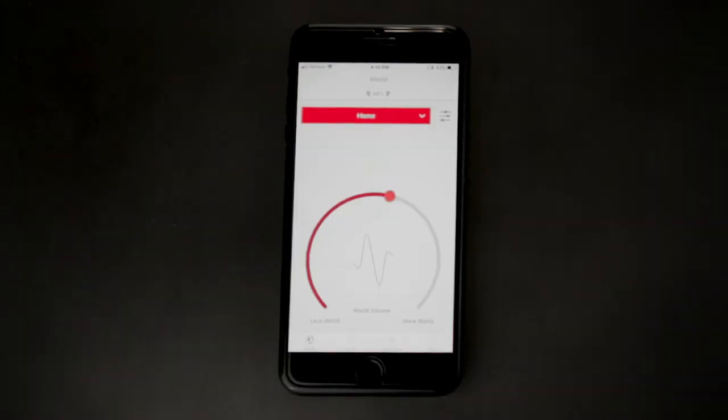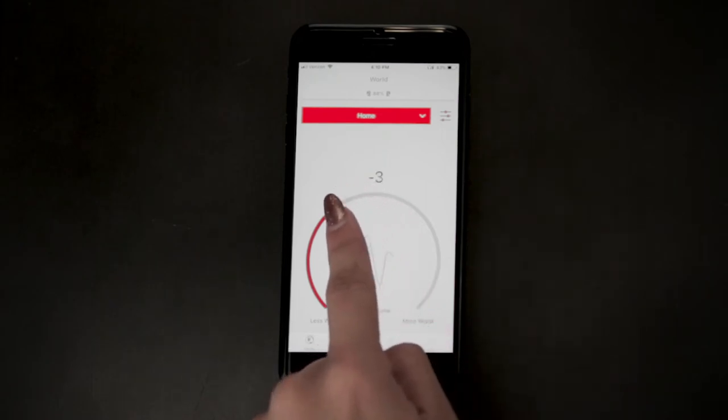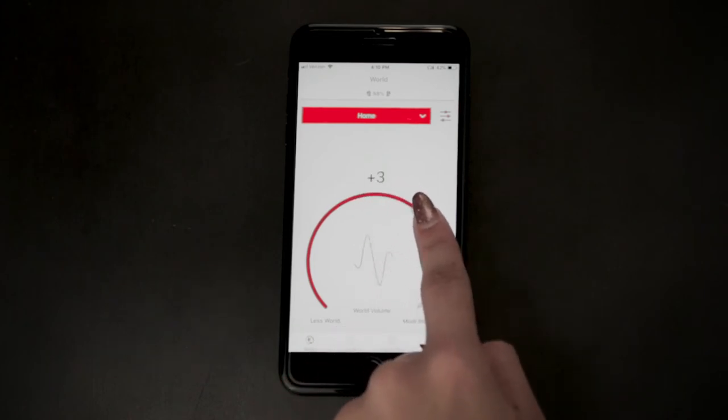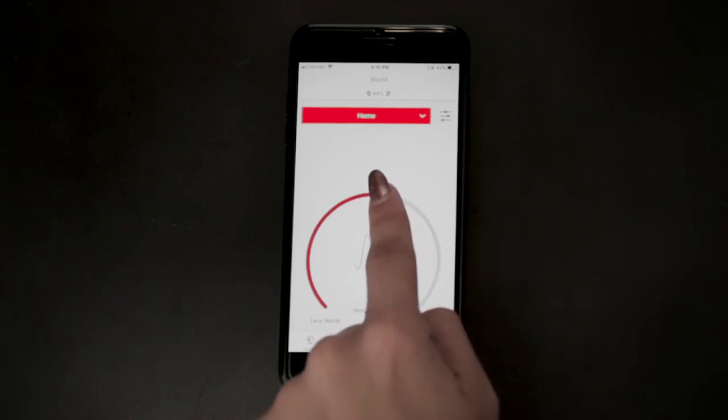The real-world volume wheel changes the volume of the world around you. To the left reduces everything you hear. To the right increases real-world sound. N is natural or no adjustment.